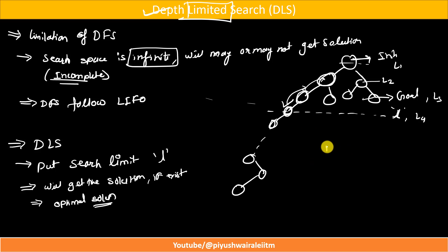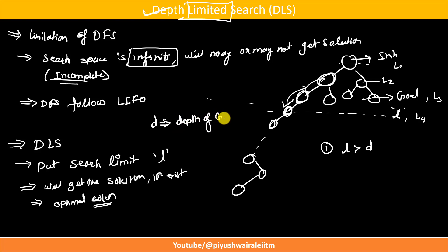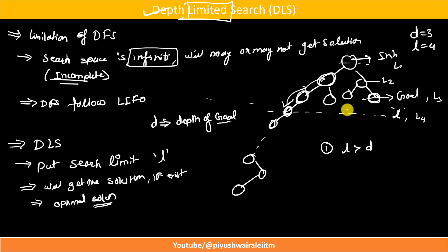There are two cases. Case one: L is greater than D. Here L is the search limit and D is the depth of the goal state. For example, if the goal is at depth 3 and L equals 4, then L is greater than D. In this case we will get the required solution — the algorithm explores and backtracks to unexplored nodes until it finds the goal. So when L is greater than D, the algorithm is complete. However, it will not give an optimal solution.